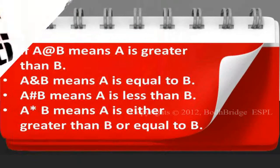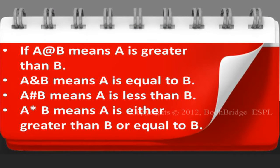Coming to question 3: 'A at the rate B' means A is greater than B. 'A and B' means A is equal to B. 'A hash B' means A is less than B, and 'A into B' means A is either greater than B or equal to B.